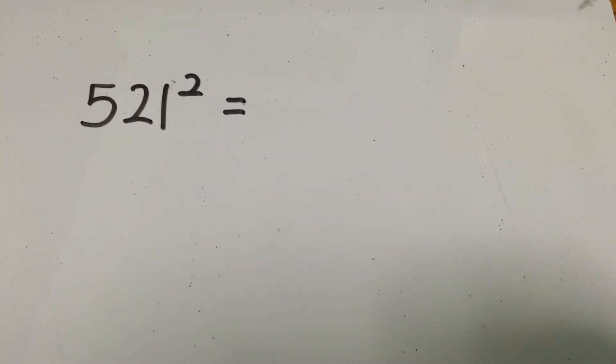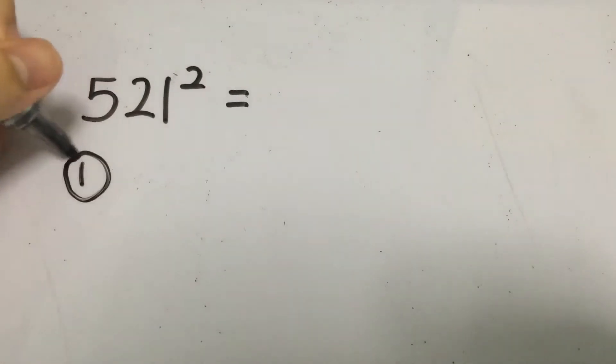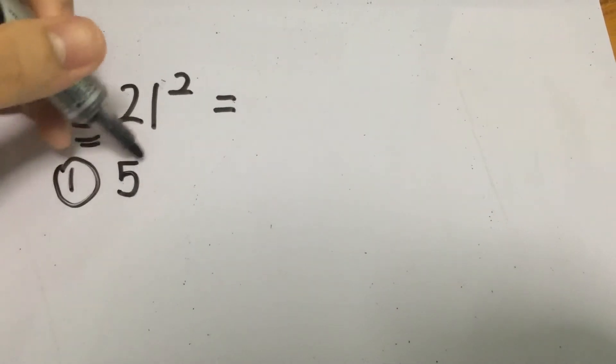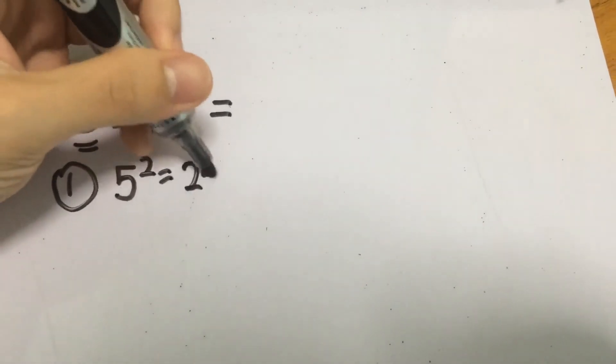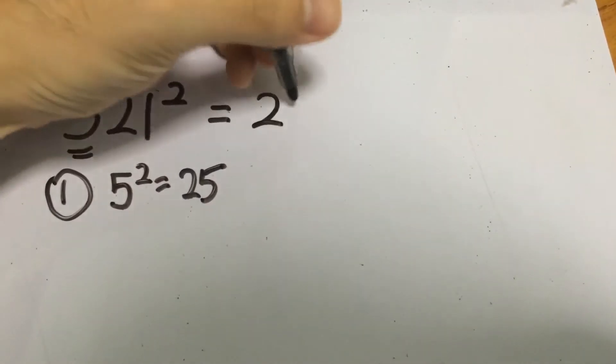Alright one more example before we wrap things up and that is 521 squared. So what do we do? First thing that we will do is we will square this first digit itself. So 5 squared gives you 25 and we will write it down here 25 first.